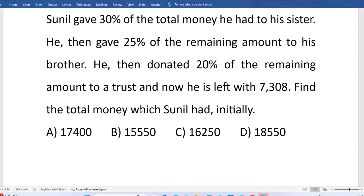Right, see the approach here. One shortcut method to solve this question: Sunil gave 30% of the total money he had to his sister. 30% is gone. Sunil is having only 70% of the amount. That's the remaining.